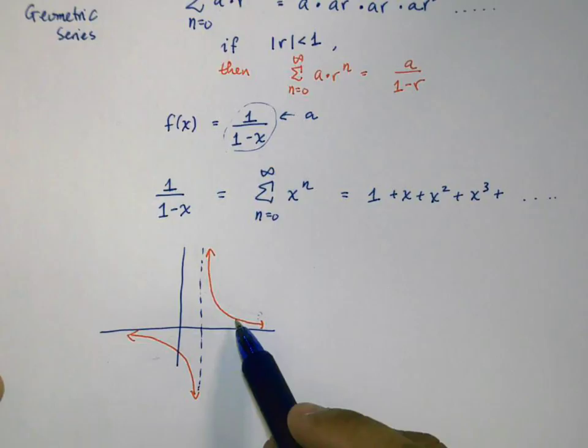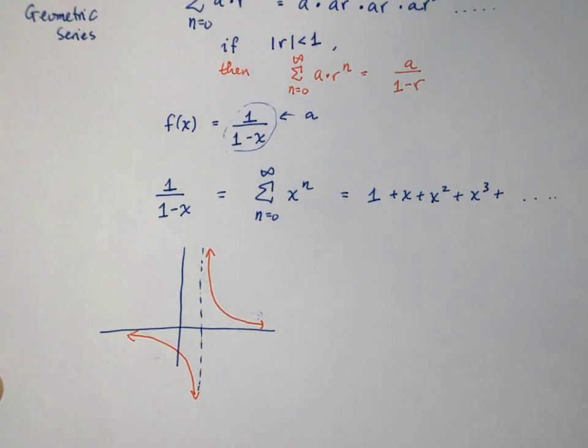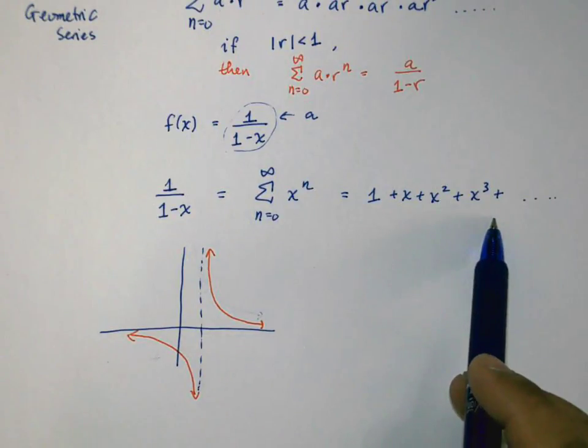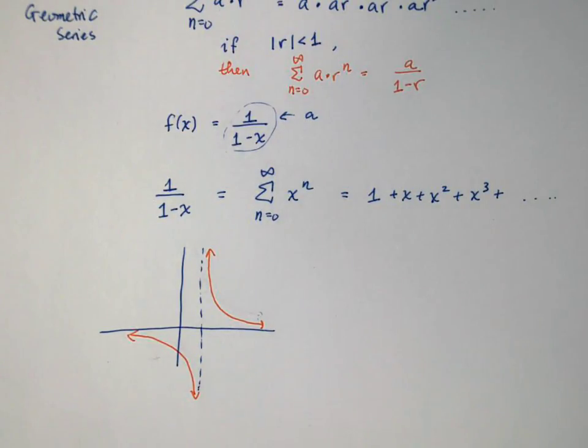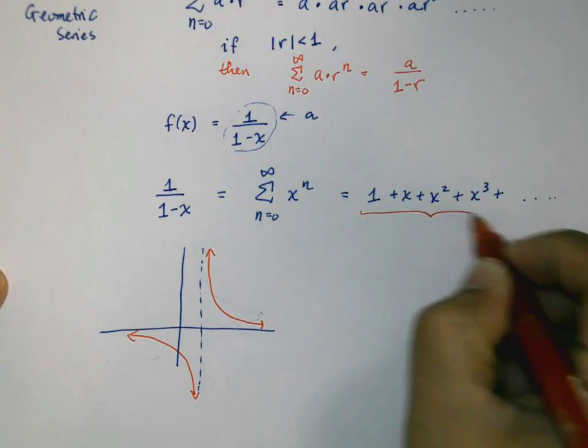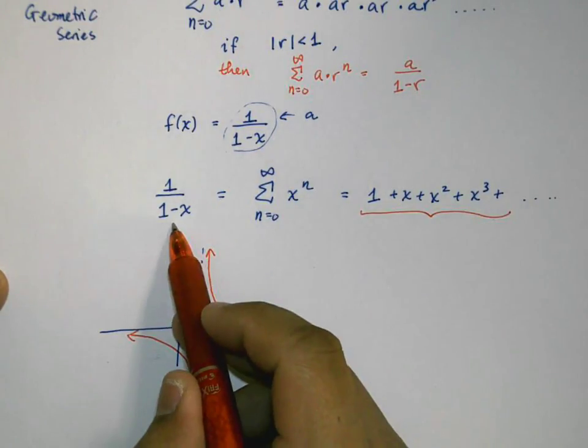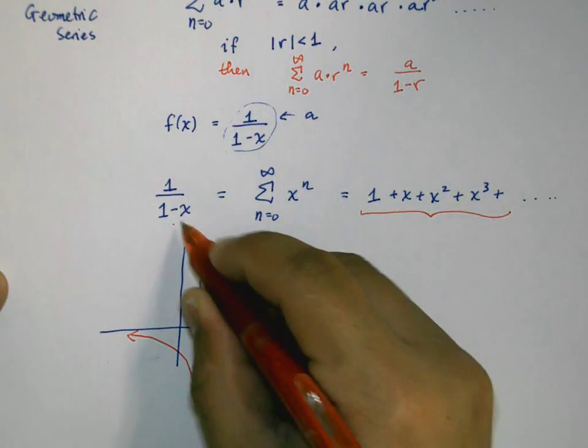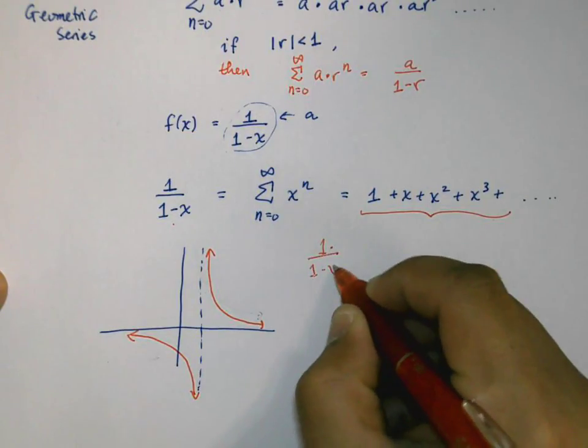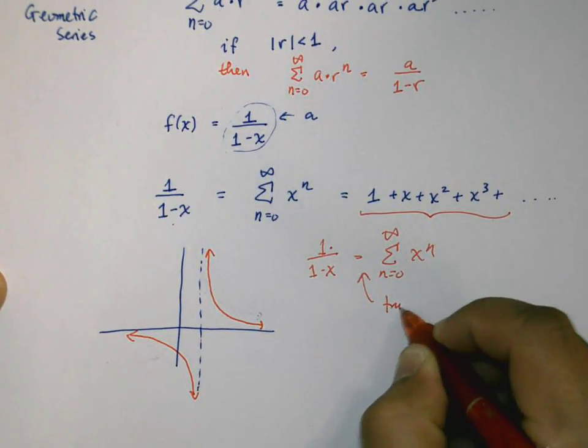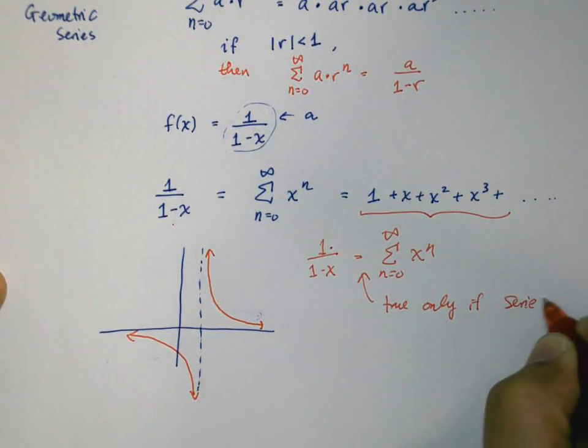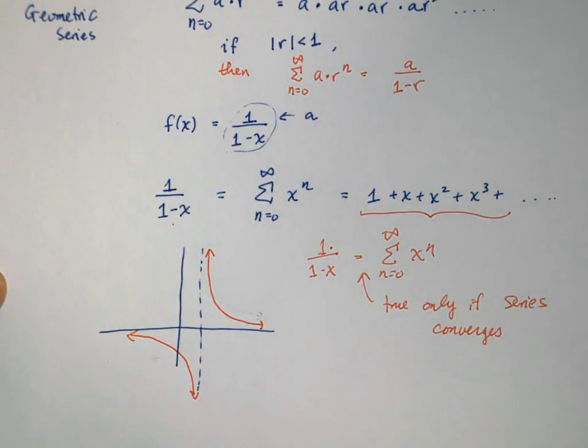1/(1-x) is this function, and what we're saying is that somehow this graph is exactly equal to this infinitely long polynomial. You might say oh wait a minute, that can't possibly be true. Well, you'd be partially right—it's not true all of the time. We have to consider the interval of convergence. In other words, this expanded series is exactly equal to this one only if the expression and the series—this is true only if the series converges.